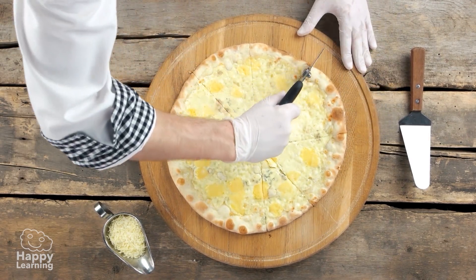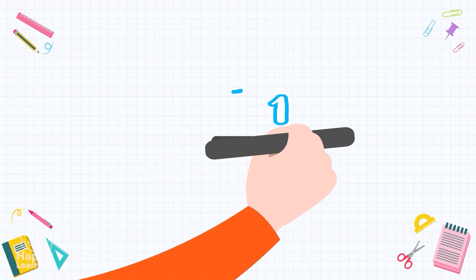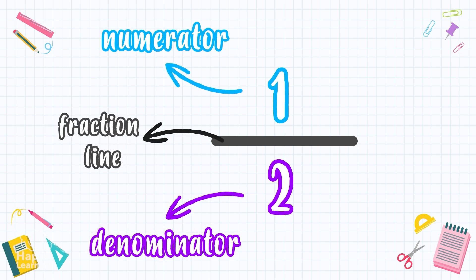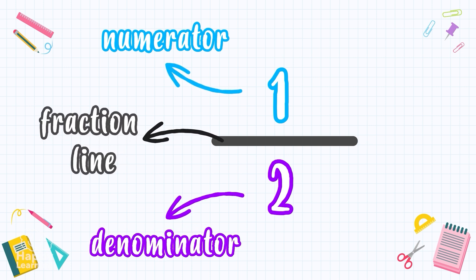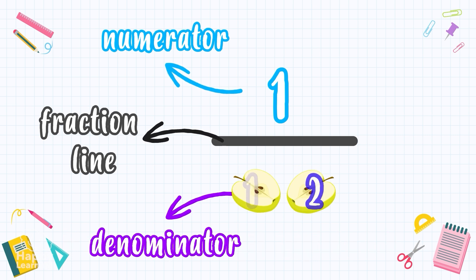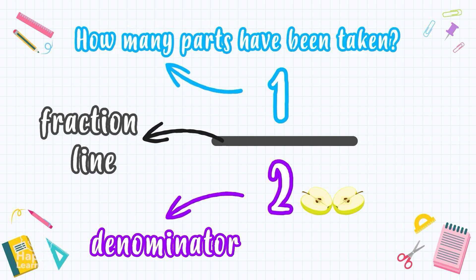Do you remember how a fraction is formed? A fraction is made up of a numerator and a denominator, separated by a fraction line. The denominator is the bottom number and tells us how many parts the unit has, meaning the total amount, the whole. The numerator tells us how many parts of the whole has been taken.